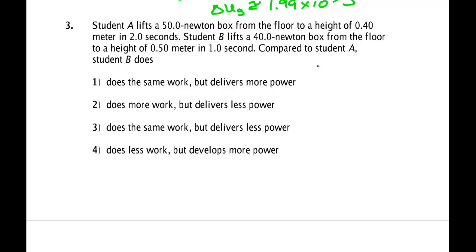It's doing negative work and the change in potential is equal to the negative of the work done by the force, which in this case was gravity. So for A, we're just looking at delta U, which in this case is 50 Newtons times 0.4 meters. Put that all together, you get 20 joules of work. For student B, it does 40 Newtons to a height of 0.5 meters, which is also 20 joules. So they do the same amount of work. We can wipe out 2 and 4 as possibilities.